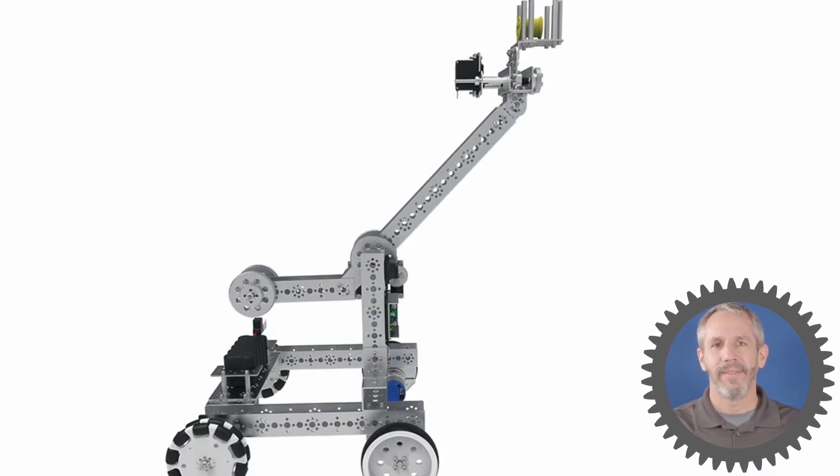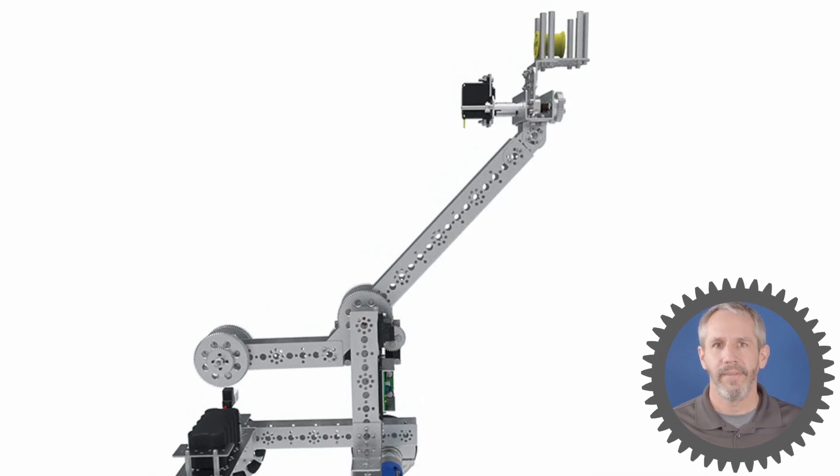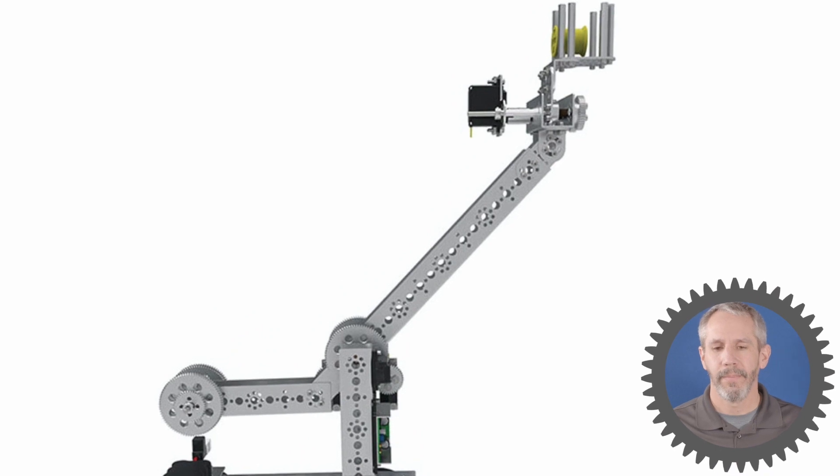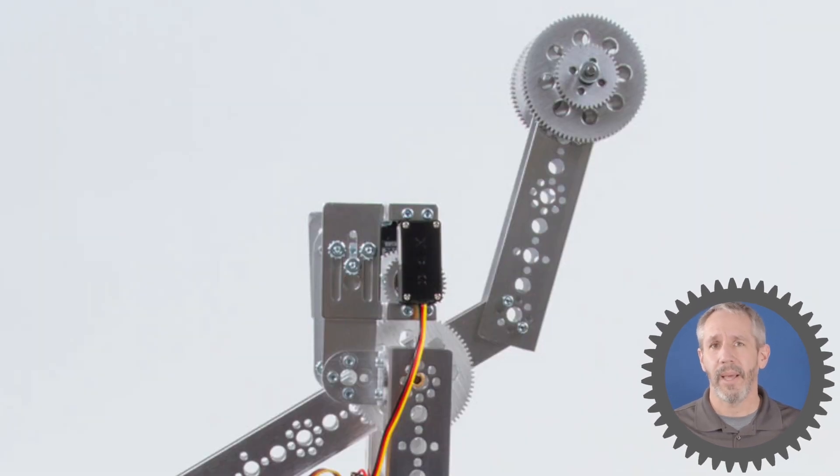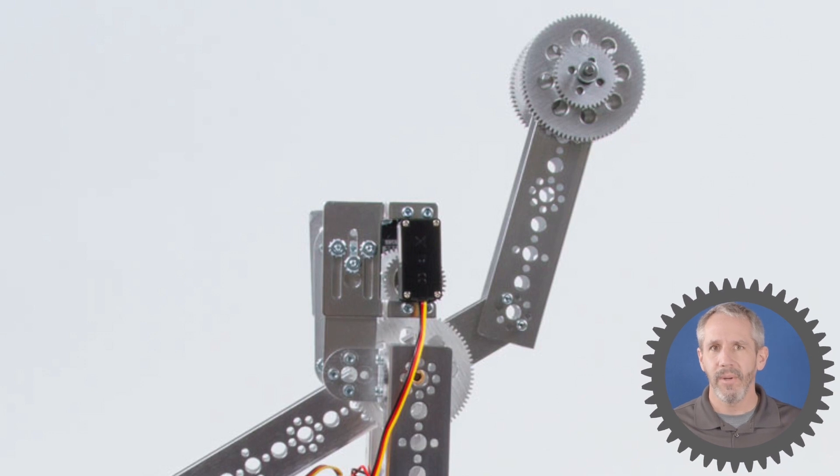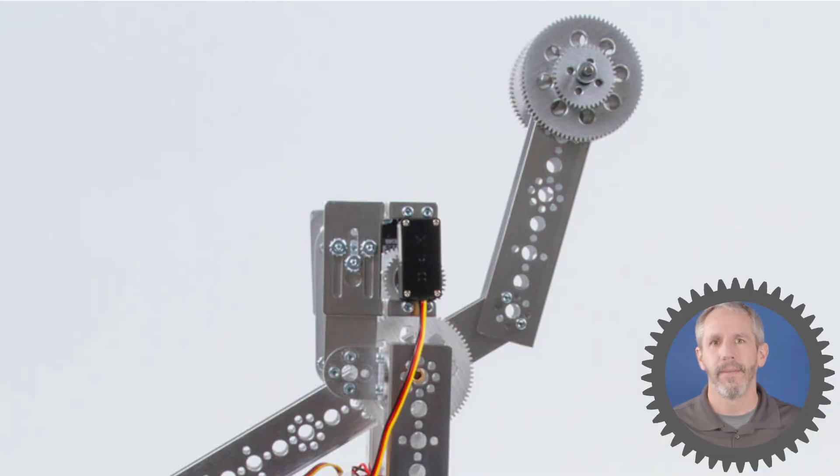One thing to keep in mind when using lever arms is that you're not only lifting the weight of the object, you're also lifting the weight of the arm itself. So the longer the arm, the more weight you're lifting. So remember to keep your lever arms as light as possible based on how high you have to lift an object. And then you can always use a counterbalance that negates some of the weight of the arm itself.